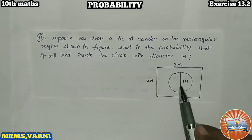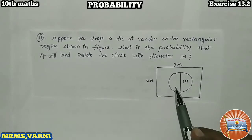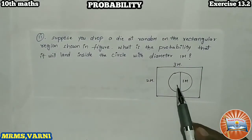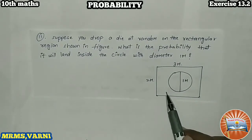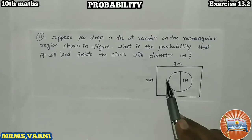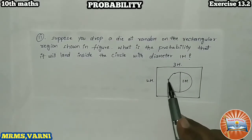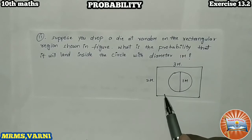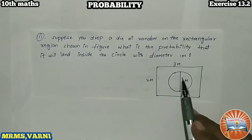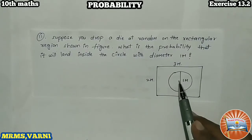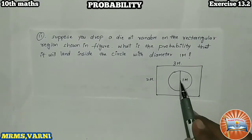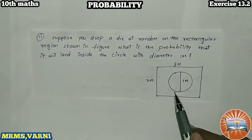We have solved this kind of problem in an example. What is the favorable outcome here? Yes, the favorable outcome is the die is dropped into this circle region.